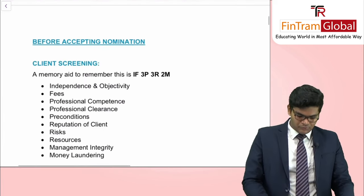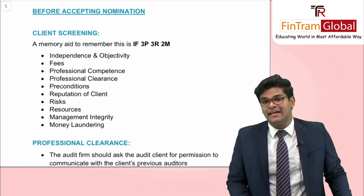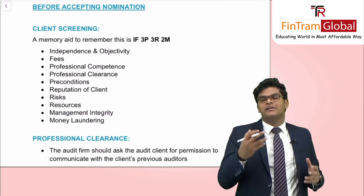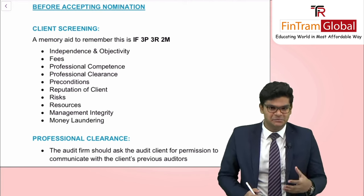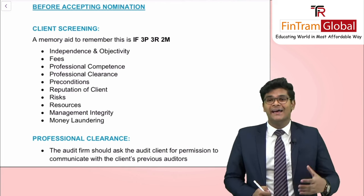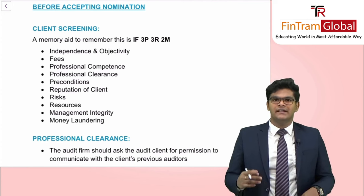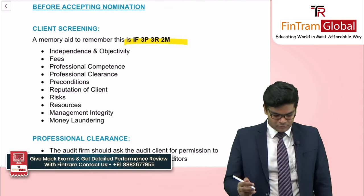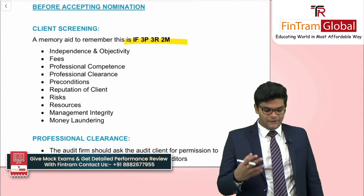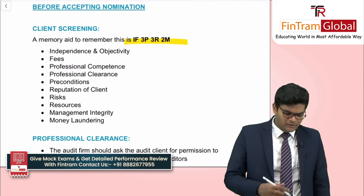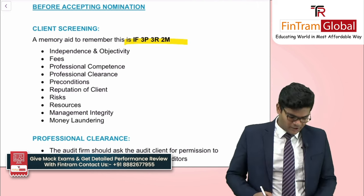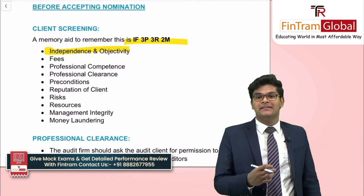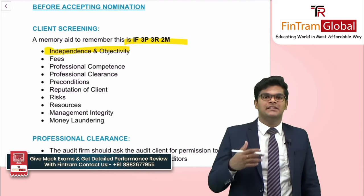Moving on to the process we follow before accepting a nomination. Before accepting the nomination to audit a particular client, there are some formalities we must follow as part of our audit standards. We must conduct client screening. A memory aid to remember this is F3P3R and 2M. The first aspect is independence and objectivity — are there any threats to independence or objectivity, i.e., any ethical threats? Secondly, we look at fees — is there any self-interest threat due to the fee, or are we conducting low-balling activities?